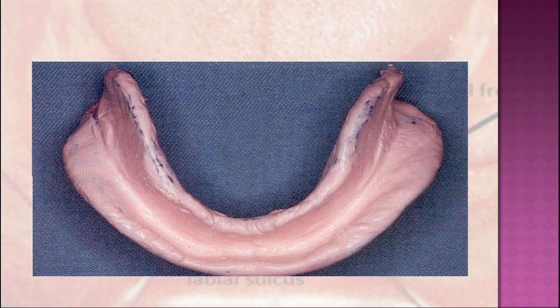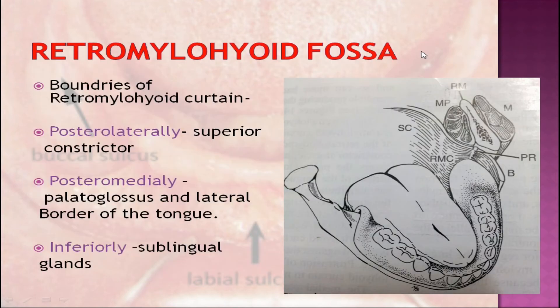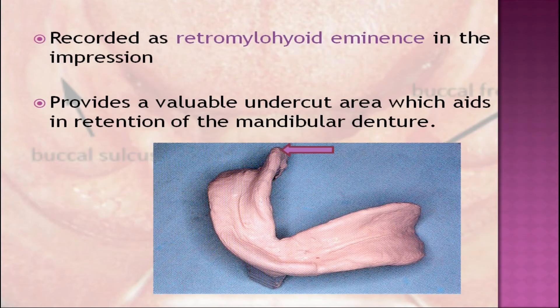The retromylohyoid fossa belongs to the posterior part of the alveolingual sulcus. It is the area posterior to the mylohyoid muscle and is bounded by the retromylohyoid curtain. The boundaries of the retromylohyoid curtain are: posterolaterally — the superior constrictor; posteromedially — the palatoglossus and the lateral border of the tongue; and inferiorly — the sublingual glands. The retromylohyoid fossa is recorded as the retromylohyoid eminence in the impression.